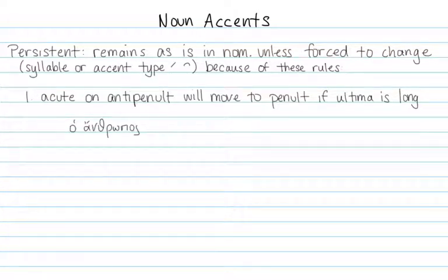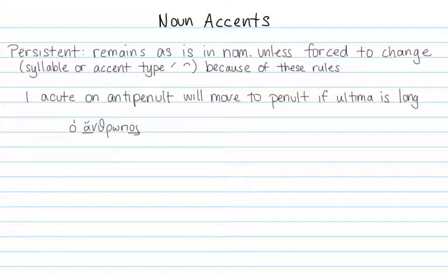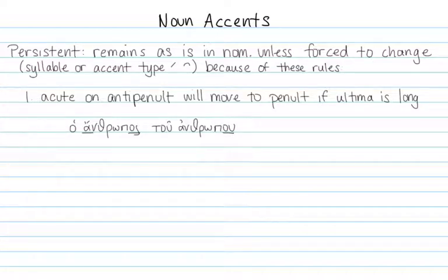For example, ho anthropos has an acute on the antipenult, and you memorize it as such in the nominative case. The ultima happens to be short. But when we change to the genitive, the ultima is now long. So the rule says the acute on the antipenult must move to the penult. We get ho anthropos, but tu anthropu.